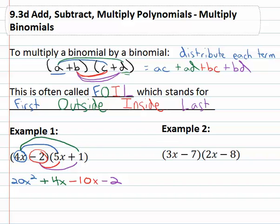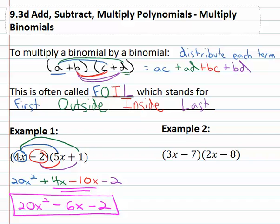Often after we've gone through and done this FOIL first, outside, inside, last, there are some like terms that we need to combine, and often we'll find them in the middle. You'll see here we've got 4X and negative 10X we can combine. So for a final answer we've got 20X squared minus 6X minus 2 when we multiply our two binomials together.